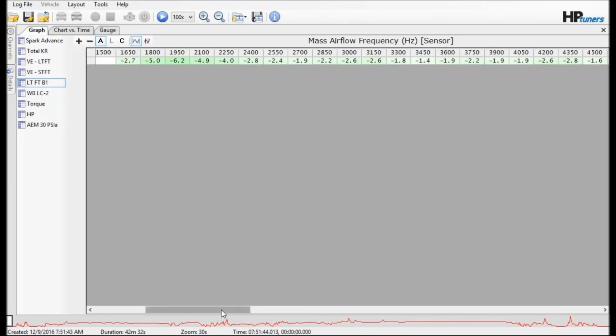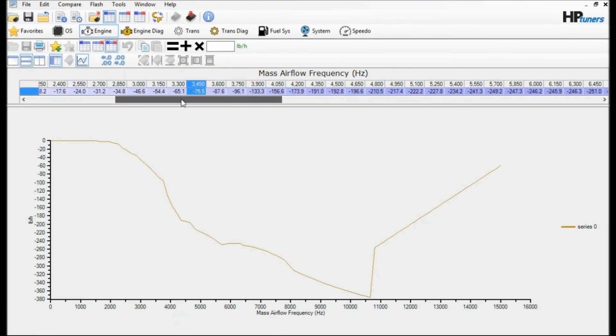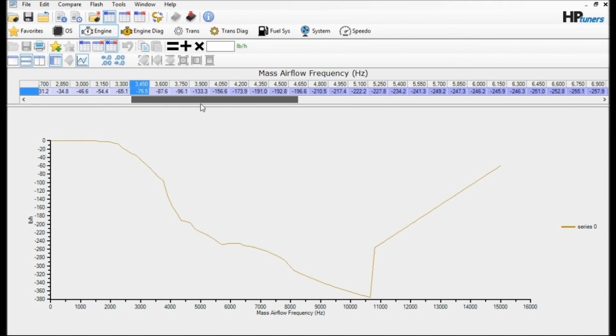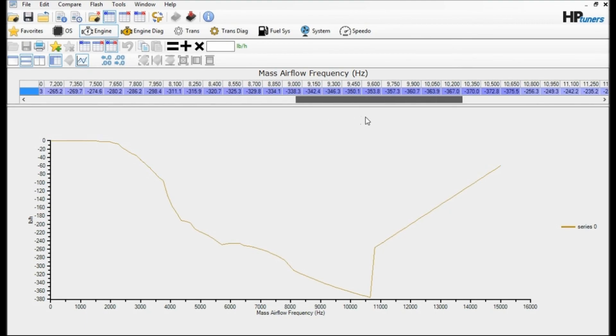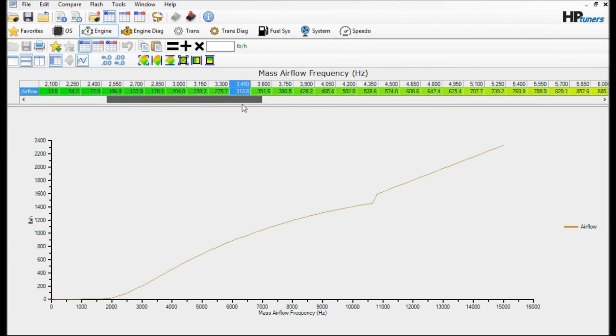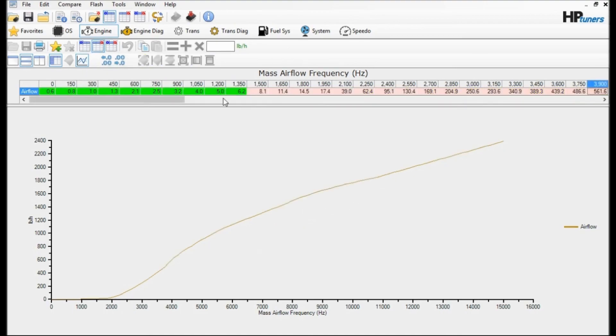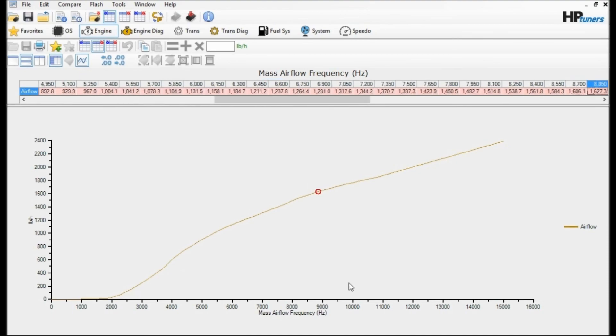Finally here is the ZZP intake with the spacer removed and the laminar element installed, and this is after I recalibrated much of the mass airflow frequencies. You can see I had to add a bunch of fuel to compensate for that lean condition and bring our long-term fuel trims down. So a reference, 428 pounds there, and we had to add over 100, about 130 pounds there to compensate.